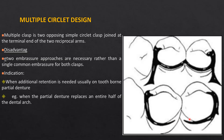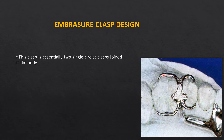In an embrasure clasp, the retentive clasp tips face away from each other — one pointing mesially and another distally — and these are the reciprocal arms placed at or above the height of contour on the opposite side, engaging the undercut. These clasps require more interocclusal space, and it is difficult to seat the cast framework at the framework fit appointment, requiring sufficient clearance from the opposing teeth.